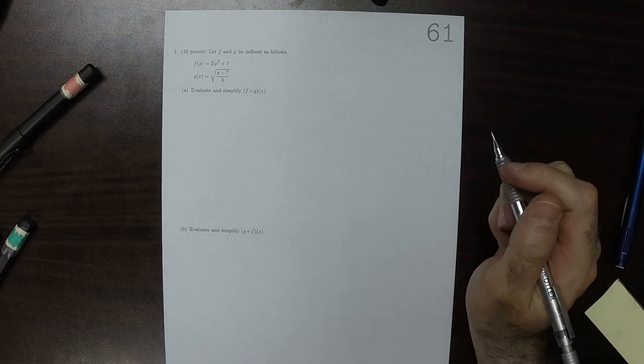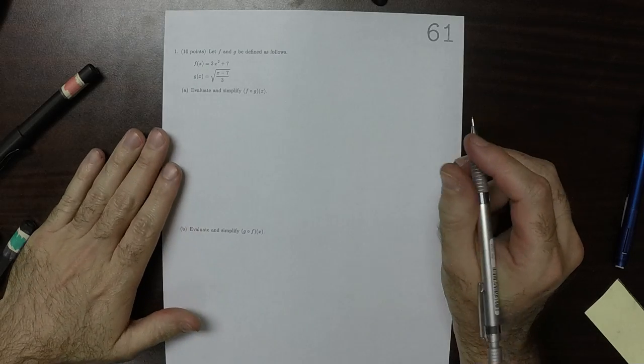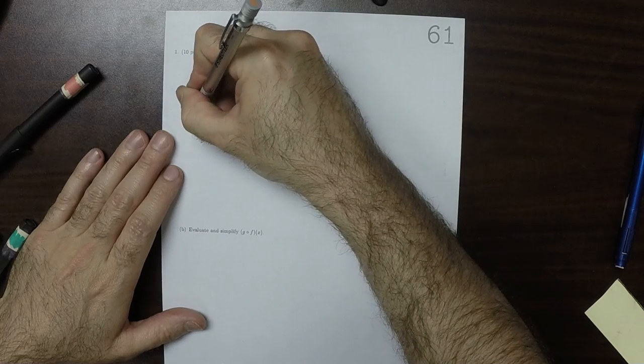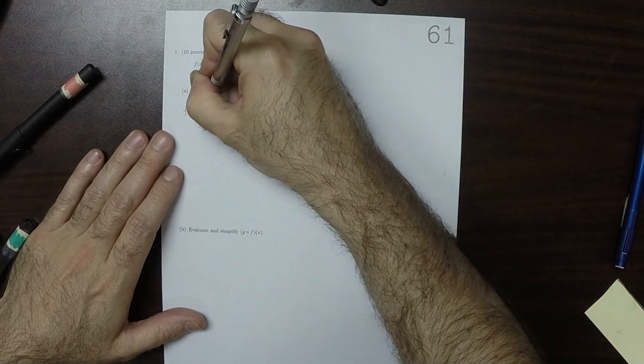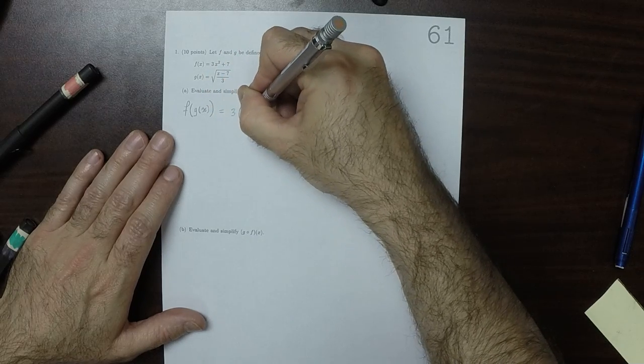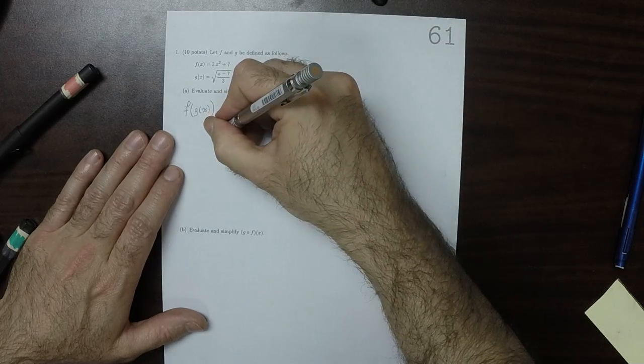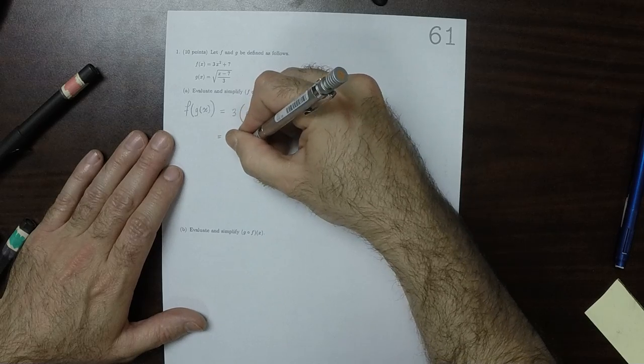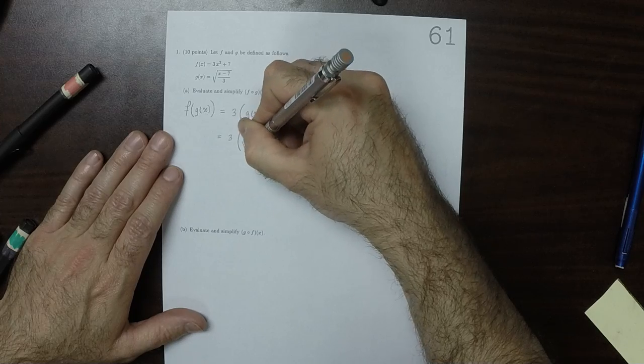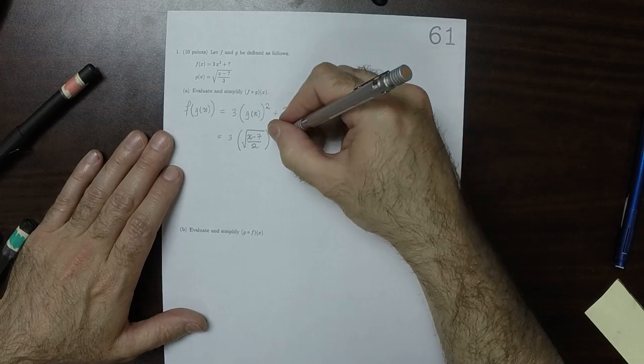This is the solution to written homework 61. Okay, so f evaluated at g of x, that's 3 g of x squared plus 7, which is 3 square root x minus 7 over 2 squared, and then plus 7.